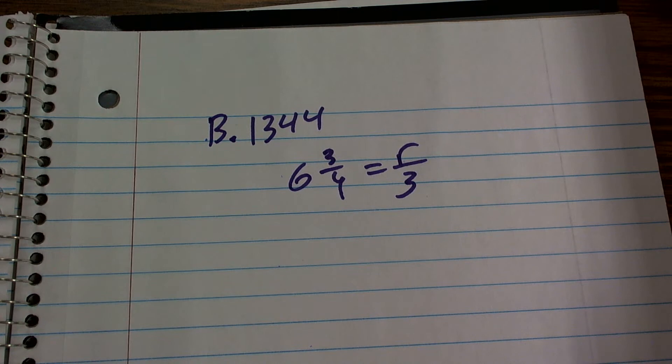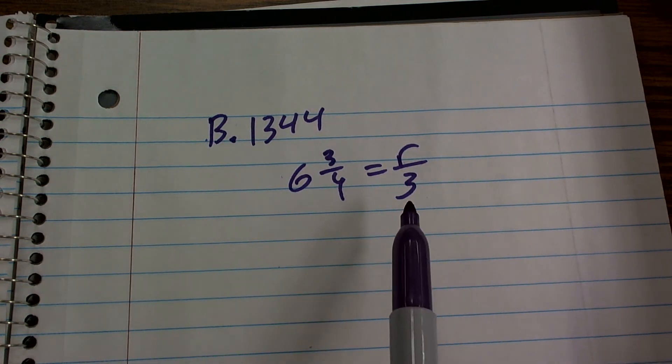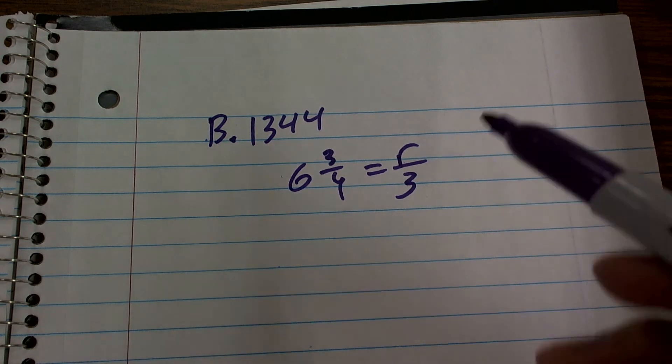I just need to undo the operations that's happening to it. And a lot of us freeze once we see division, because it's just not as common, so we kind of freak out. Well, remember, to undo division, I need to multiply.